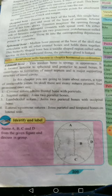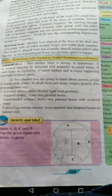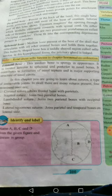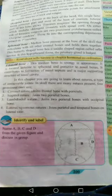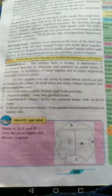The four prominent skull sutures are: coronal, sagittal, lambdoidal, and lateral (squamous) sutures. The coronal suture joins the frontal bone with the parietal bones. The sagittal suture joins the two parietal bones. The lambdoidal suture joins the two parietal bones with the occipital bone. The lateral suture joins the parietal and temporal bones on the lateral side.